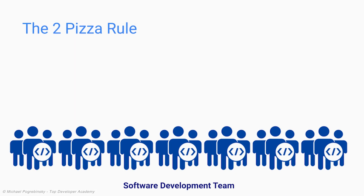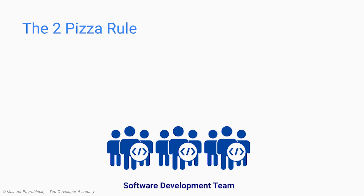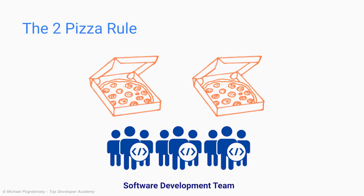To quote Jeff Bezos, the founder of Amazon, the perfect size of a team should be small enough that it can be fed with two pizzas, which is the key to efficiency and scalability. So if your company fits this model, there's no reason to use anything more complex.